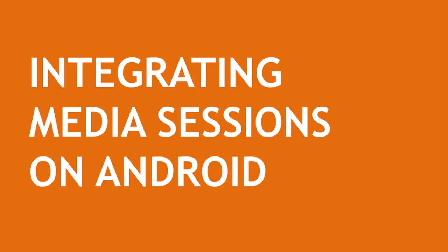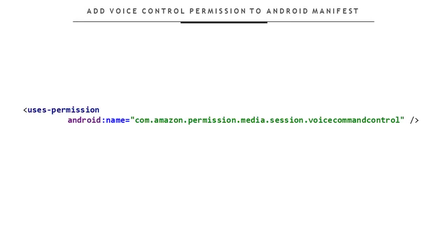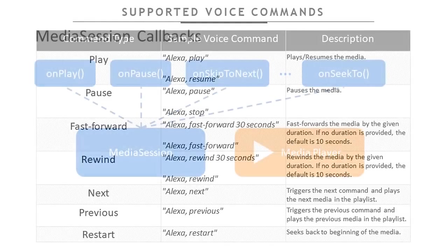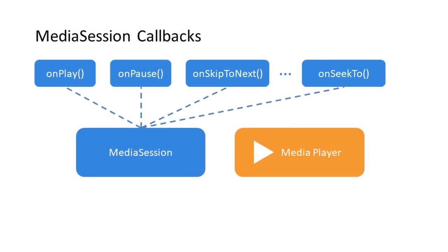These features are achieved using the Android Media Session API integrated in your application. Now let's see together how you can easily integrate the media session in your Amazon Fire TV application. The first step is to add the voice control permission to your Android manifest, which will allow Amazon Fire TV to identify your application as voice enabled. There are quite a lot of commands available through Media Session, all related to media playback — controls like play, pause, fast forward, and more.